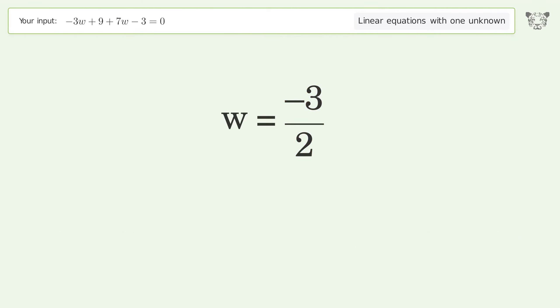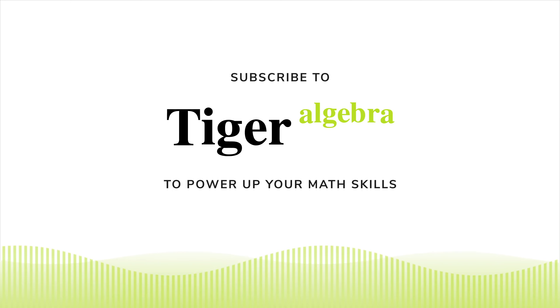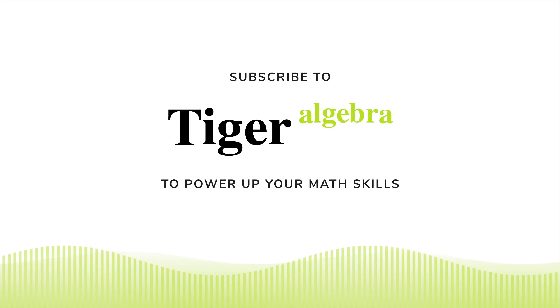And so the final result is w equals negative 3 over 2.